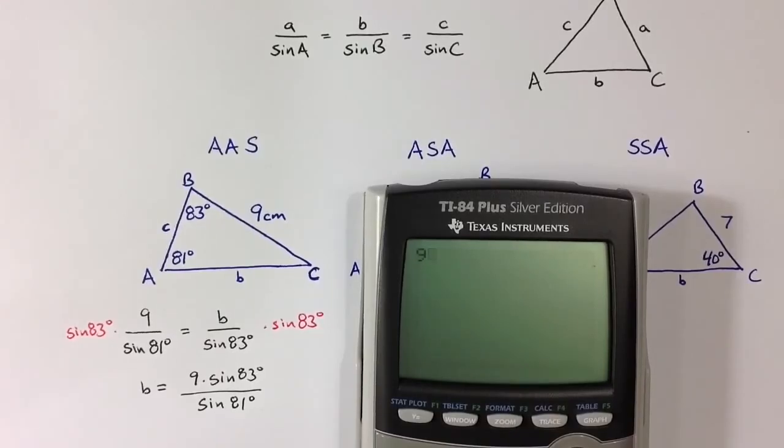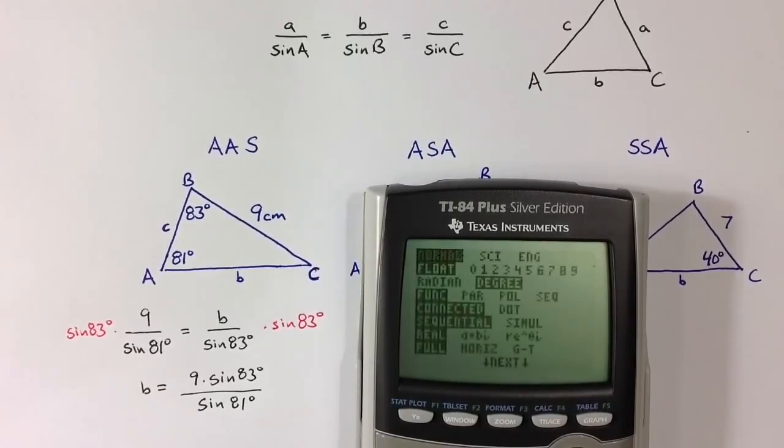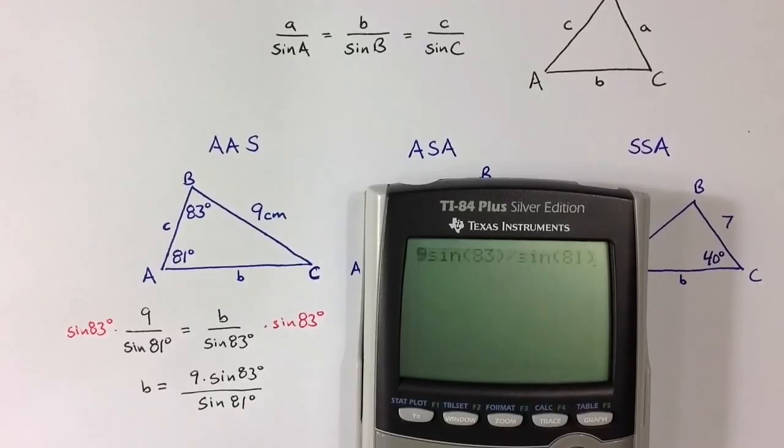And so we can figure out what this value is using a calculator. If I enter in 9, and then sine of 83, closing the parentheses to end the sine function and then divide by sine of 81. Let me check for a moment that I'm in degree mode, and I am.